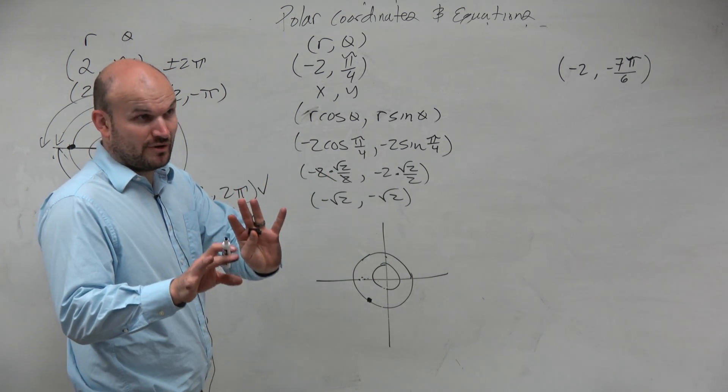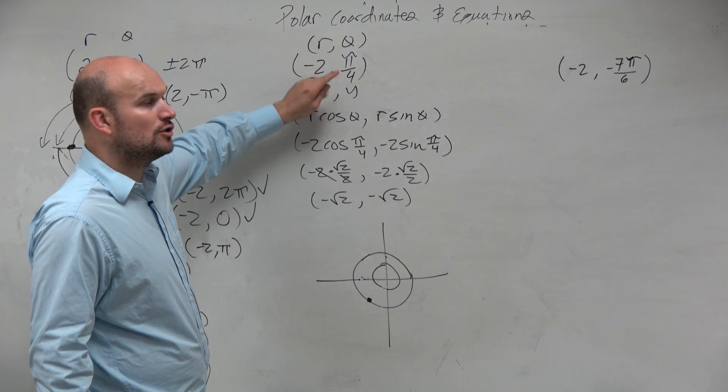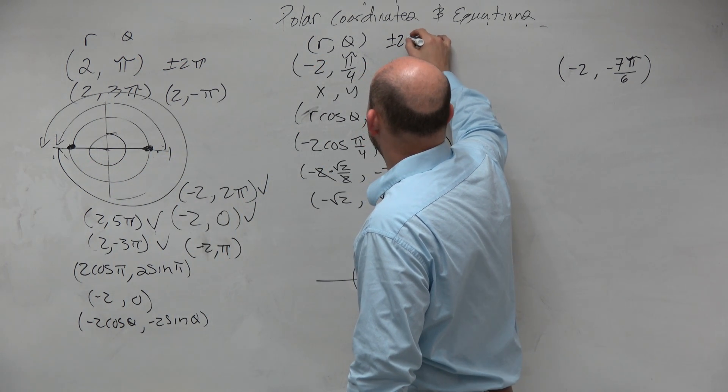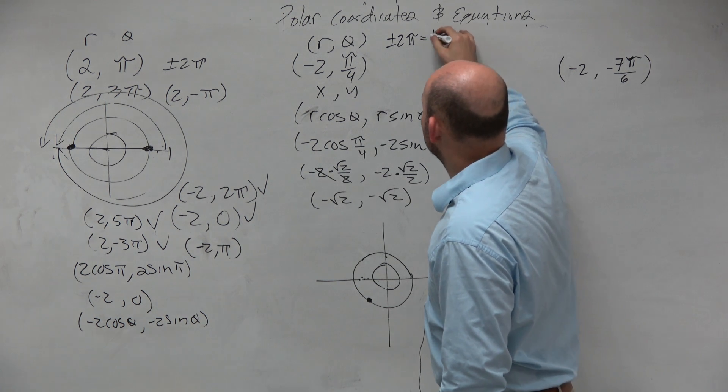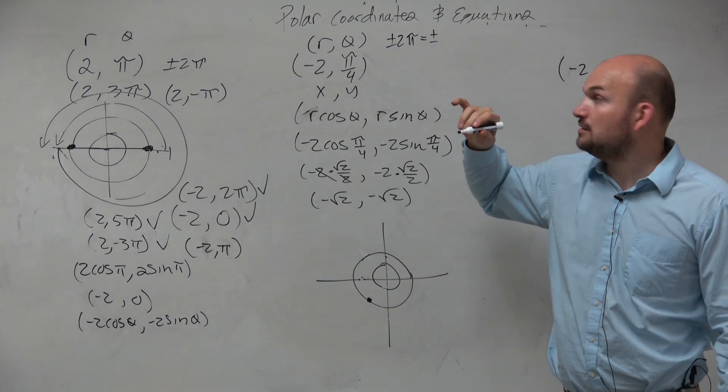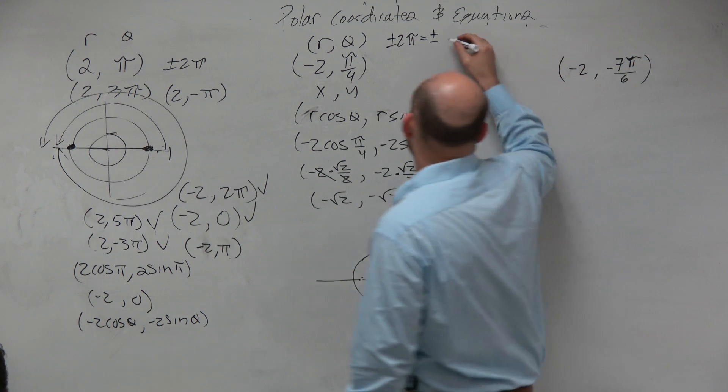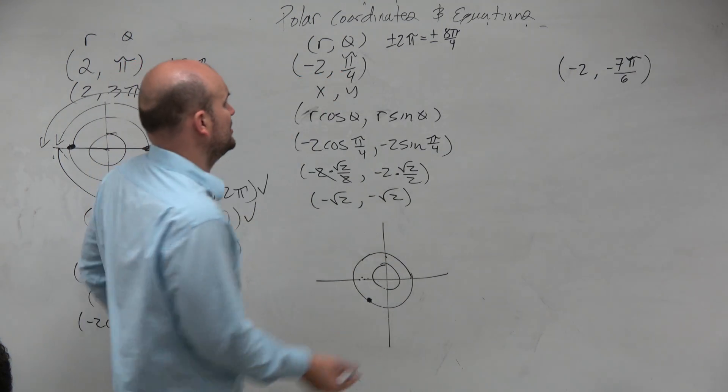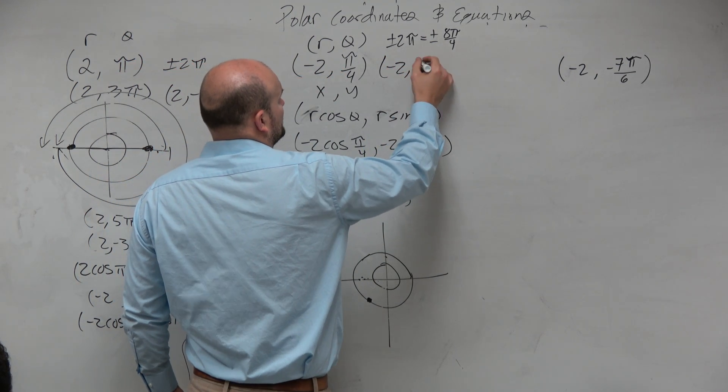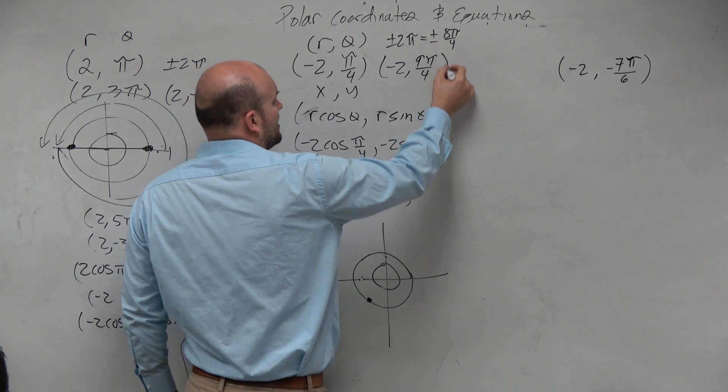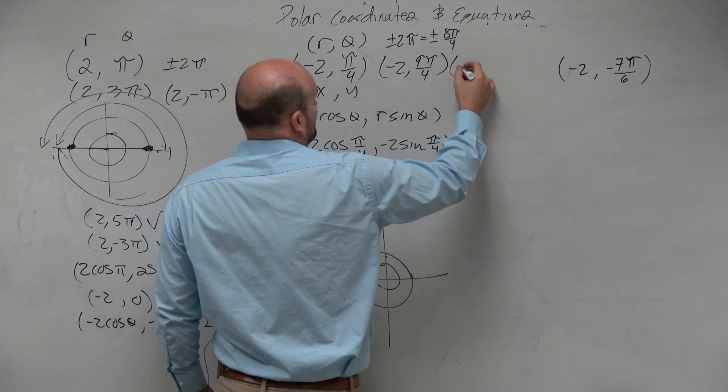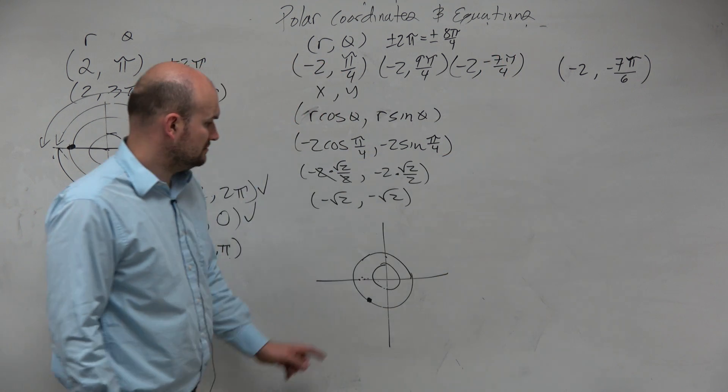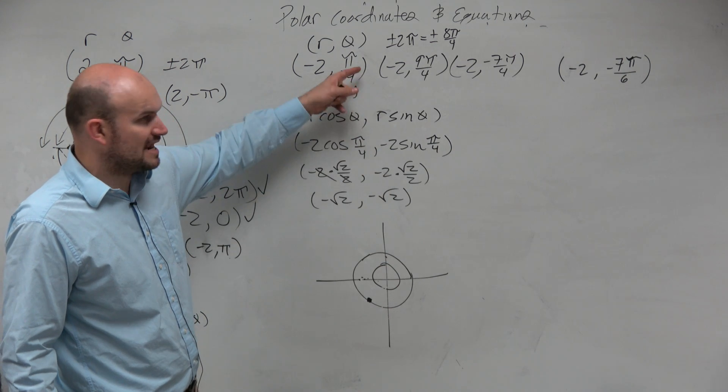So first of all, the easy way to find different representations is just to find coterminal angles here. So if I'm just adding and subtracting 2 pi, in terms of force, that's the same thing as adding and subtracting 8 pi over 4. So the easy way to find multiple terms here is just to keep on adding 8 pi over 4. So you could say, well, that's negative 2, 9 pi over 4. You could do 17 pi over 4. You could subtract them, which would be negative 2, negative 7 pi over 4. And that's going to give you all these same angles.